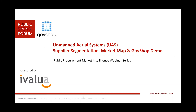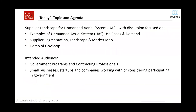Let me tee up today's agenda. We'll begin with examples of unmanned aerial systems — this is very likely intuitive for everyone attending, but I'll throw up some examples of how they're used, specifically within the government context. We'll then talk about supplier segmentation and the market map, and then dive into a demo of GovShop to identify suppliers within unmanned aerial systems and all the different subsegments within that market.